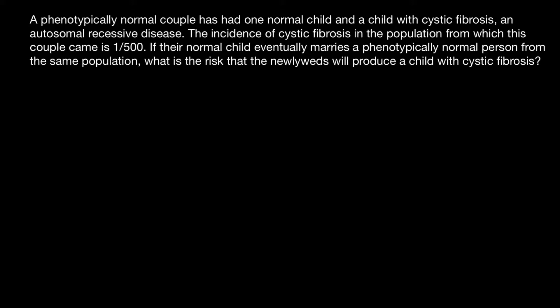If the normal child eventually marries a phenotypically normal person from the same population, what is the risk that the newlyweds will produce a child with cystic fibrosis? Let me start with a pedigree of this family. We have a female and a male, and this couple has two children — one child is unaffected and another child is affected.